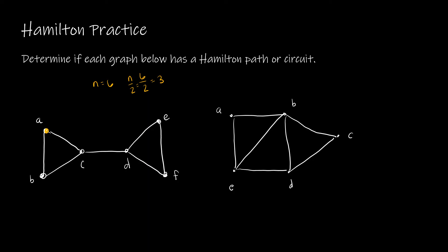For instance, if n is five, then n/2 is 2.5. If a vertex has degree two, does that mean there's no Hamilton circuit? No, it doesn't. Those theorems are helpful only in telling you for certain when a circuit exists, but they won't tell you when one does not exist.